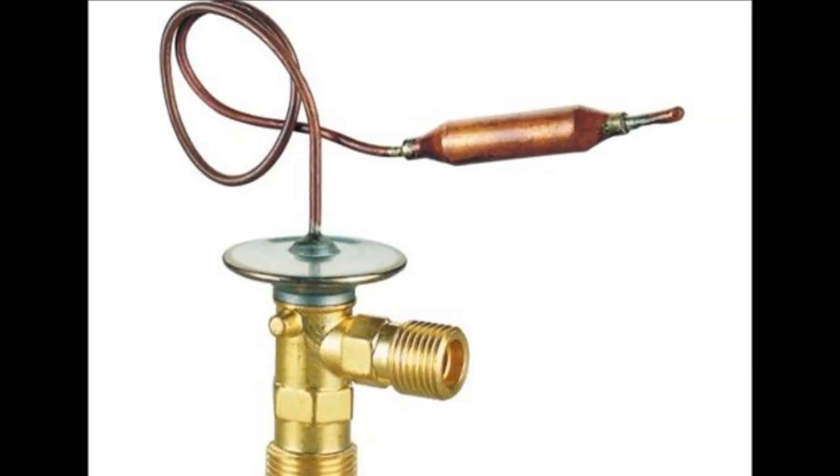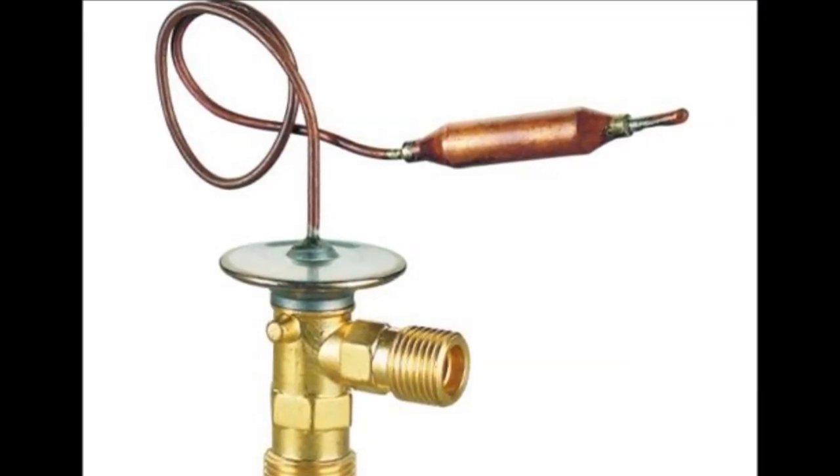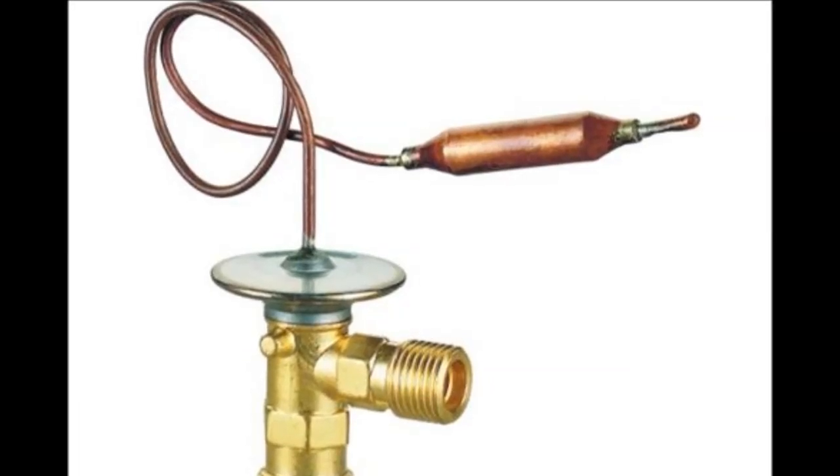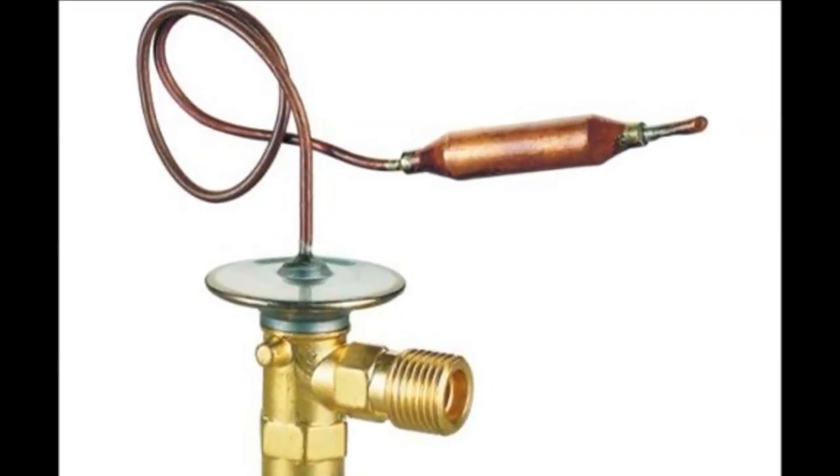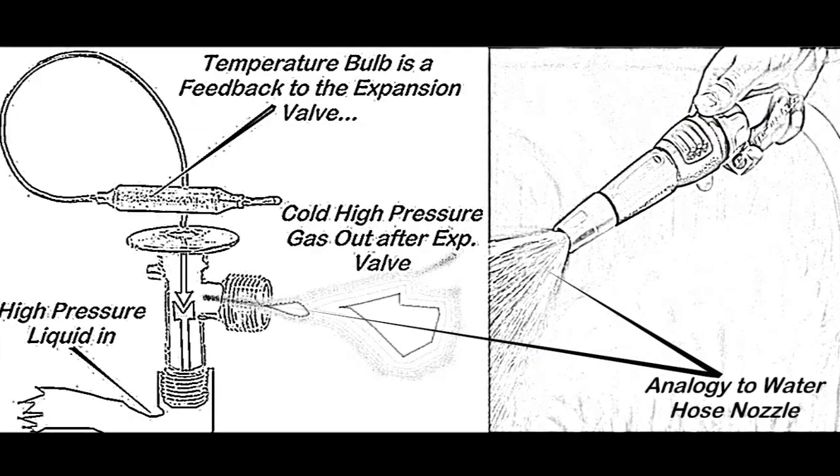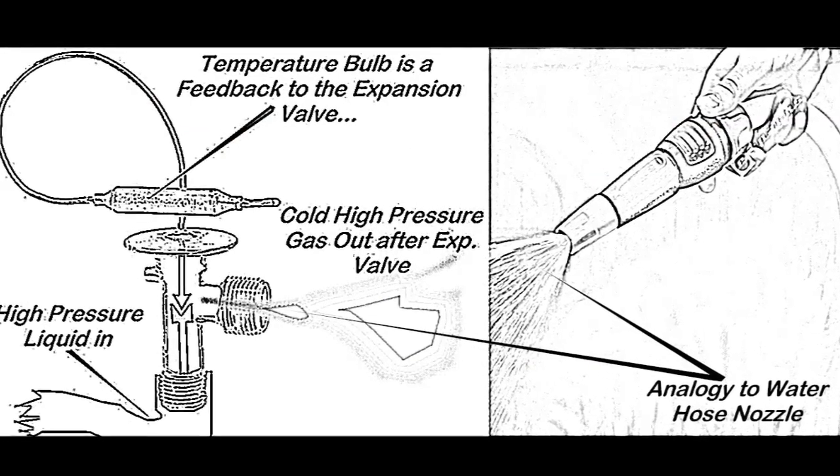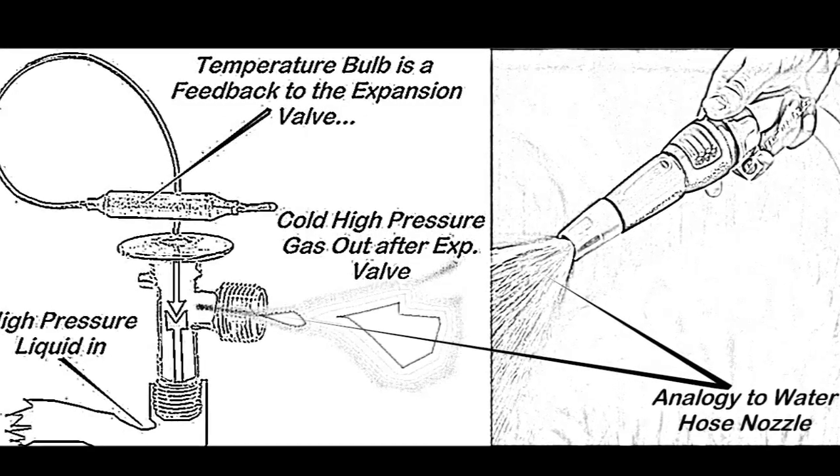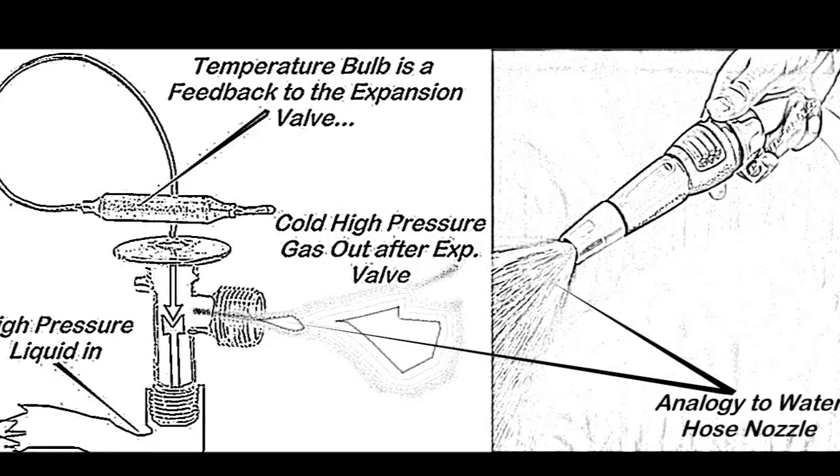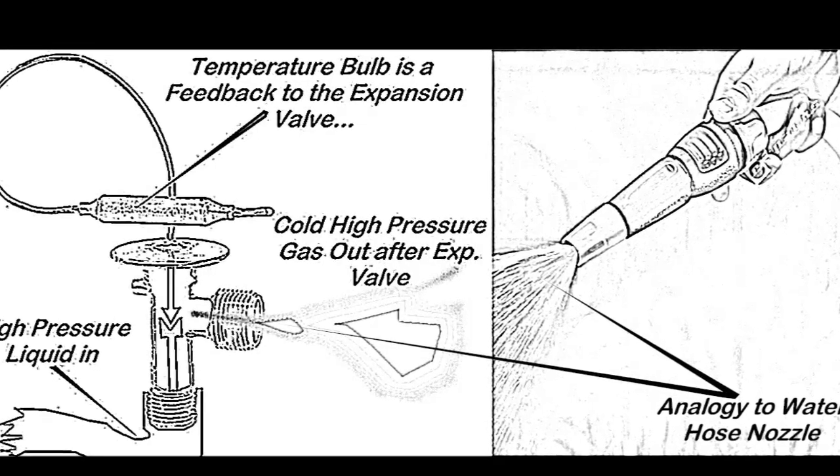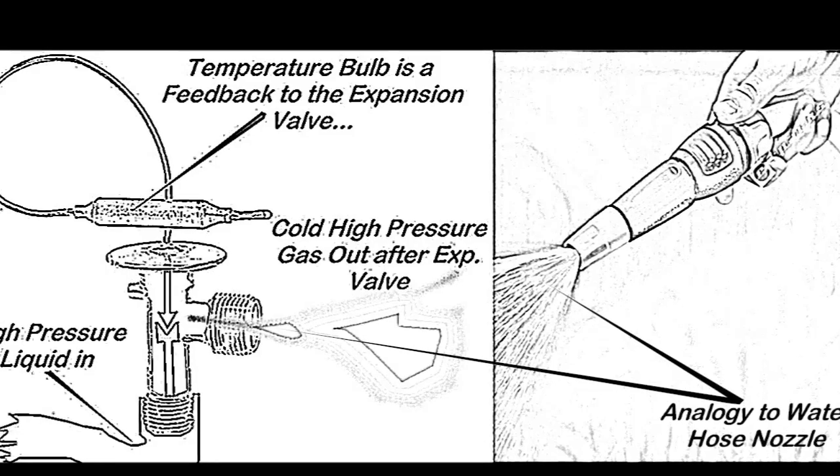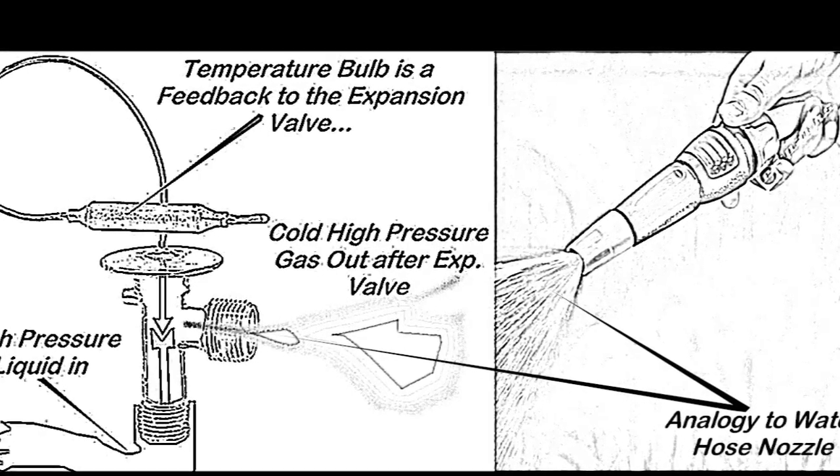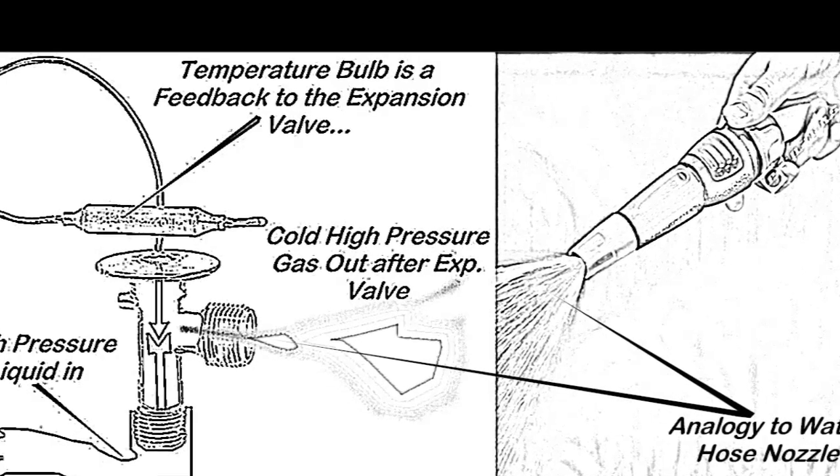Now some of these are electrical, it's a stepper motor, and we have other videos in our channel that explain the operation of electronic or electrical expansion valves. The expansion valve works pretty much like a water hose with a nozzle in front of it. When you regulate that nozzle, you can see a mist of water coming out. That's exactly what the expansion valve does.